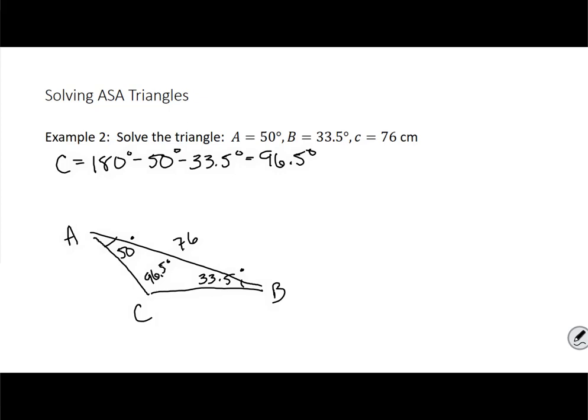So now it's business as usual like the previous video. All I have to do is set this up to where side C and angle C are my ratio that I use to solve for side A, which I need, and side B using the law of sines. So I have little a or side A over the sine of angle A, which is 50 degrees, equals the same ratio with side C, which is 76 centimeters, over the sine of angle C, which is 96.5 degrees. And then I multiply both sides by sine of 50 to solve for side A.